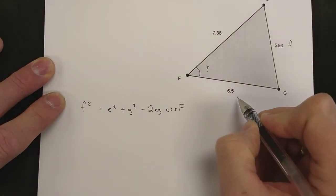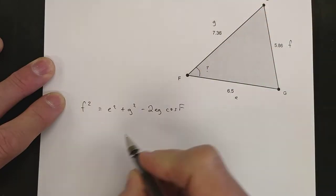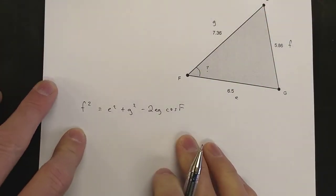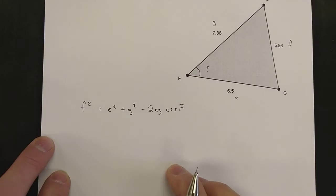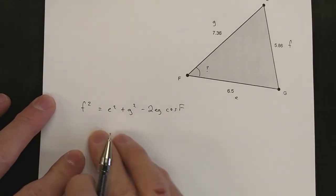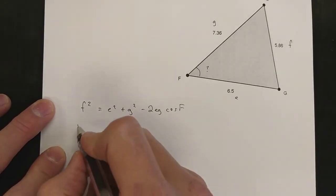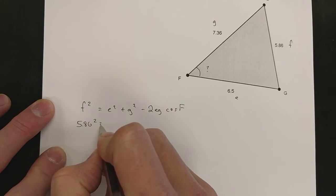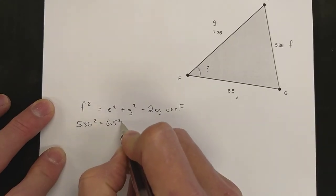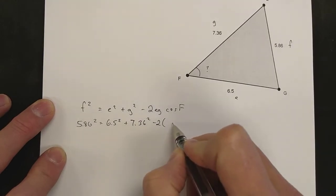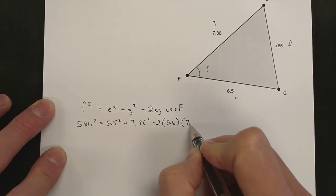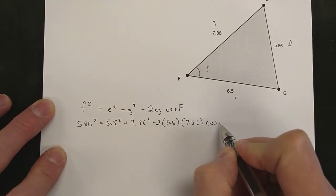F squared equals E squared plus G squared minus 2EG cos F. Remembering, this is side F, this is side E, and this is side G. I always work from it this way and then work backwards to isolate angle F. Your textbook also has a pre-rearranged formula, but I find it easier to remember one thing and then just rearrange. I'm going to fill in my numbers: 5.86 squared equals 6.5 squared plus 7.36 squared minus 2 times the 6.5 times the 7.36 times the cos of F.